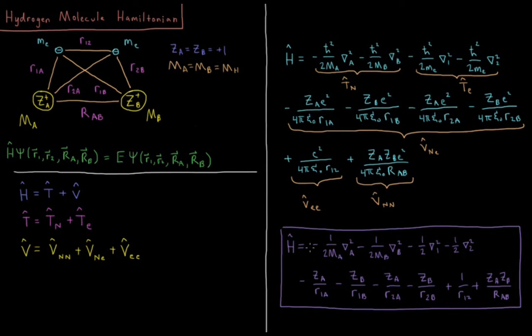So what's left over is H equals minus 1 over 2 MA. This is now how many electrons worth of mass does this nucleus have? del squared A, minus 1 over 2 MB del squared B, minus 1 half del squared 1, minus 1 half del squared 2, minus ZA over R1A, minus ZB over R1B, minus ZA over R2A, minus ZB over R2B, plus 1 over R12, plus ZA ZB over RAB.